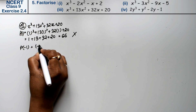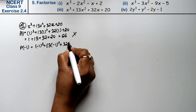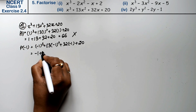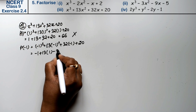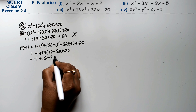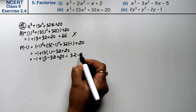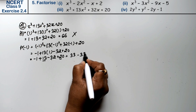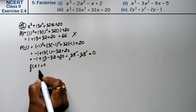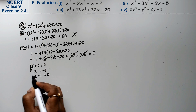Now we try x equals minus 1. Substituting: minus 1 cubed plus 13 times minus 1 squared plus 32 times minus 1 plus 20 equals minus 1 plus 13 minus 32 plus 20. Positive terms sum to 33, negative terms sum to 33, so the result is zero. That means x plus 1 is a factor.